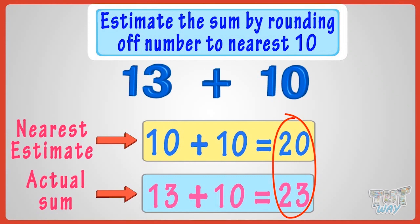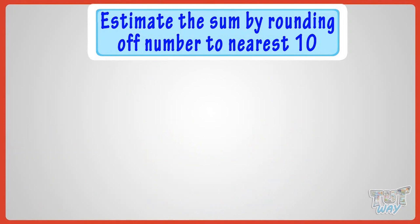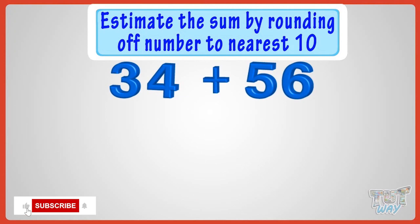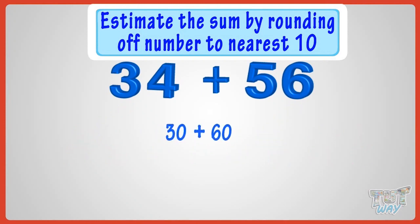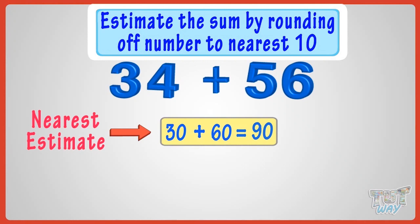Now, let's take another example. You have to add 34 and 56. Here, both the numbers are midway between two tens, so we will round off them. Rounding off 34 to the nearest ten, we will get 30 as 34 is below the 5 mark. Rounding off 56 to the nearest ten, we will get 60 as 56 is above the 5 mark. Now, add the rounded off figures to calculate the estimate. 30 plus 60 gives us 90. So, the nearest estimate of 34 plus 56 is 90.